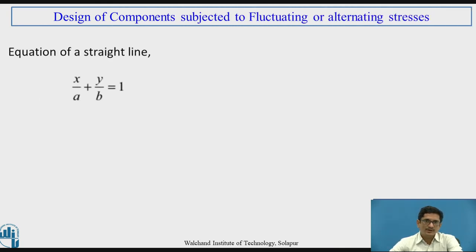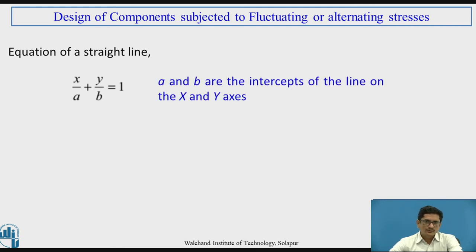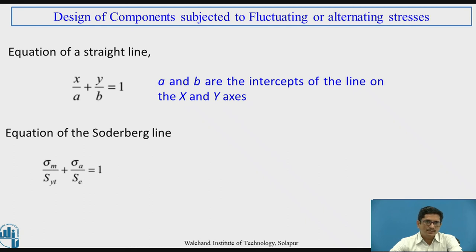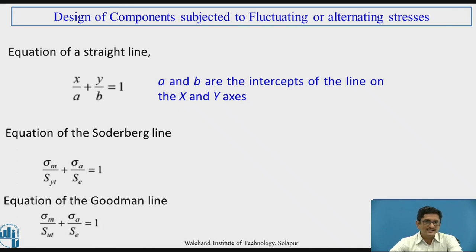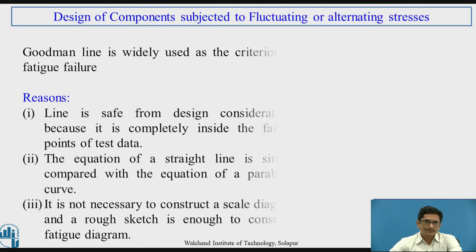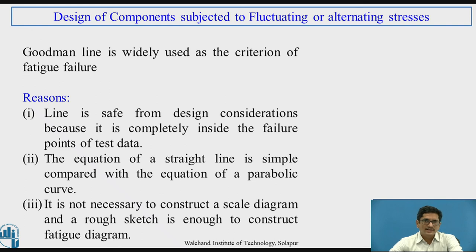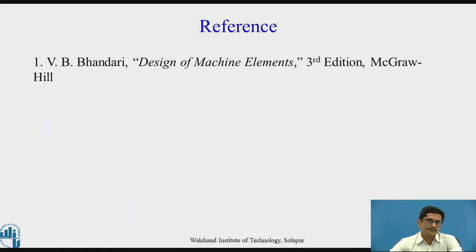Applying the equation of a straight line — X/A + Y/B = 1 — the Soderberg line equation is: σm/SYT + σa/SE = 1. The Goodman line equation is: σm/SUT + σa/SE = 1. The Goodman line is widely used as a criterion of fatigue failure because it is safe, the equation is simple, and a rough sketch is sufficient to construct the fatigue diagram without needing a scale diagram. Thank you.